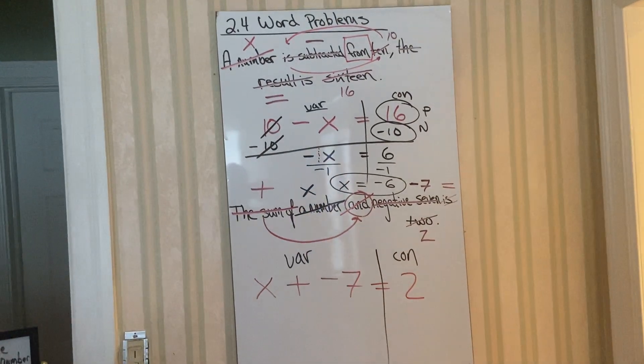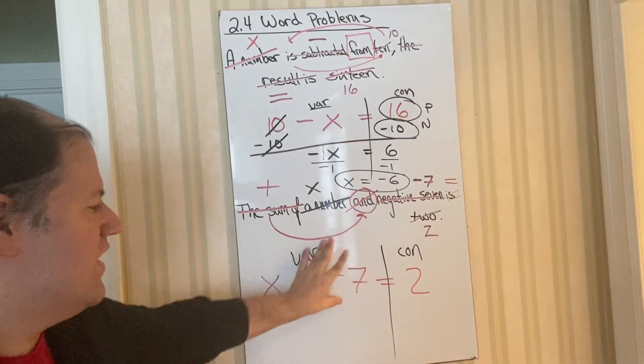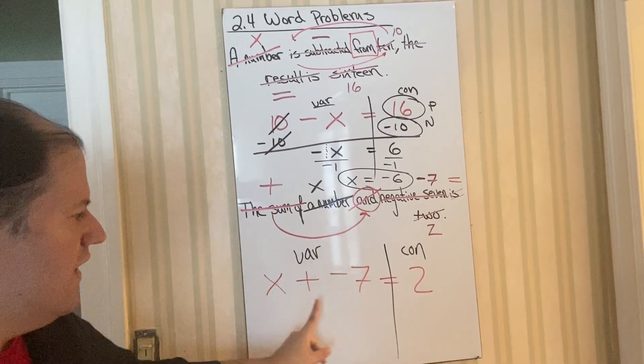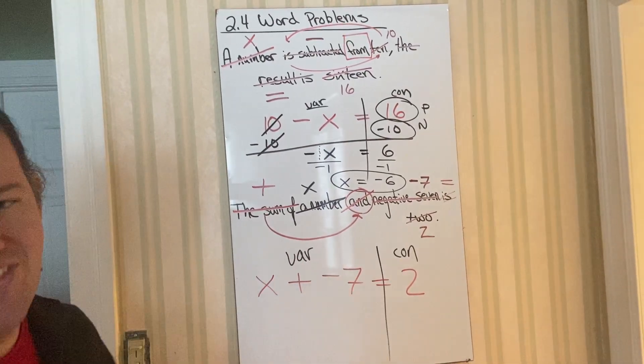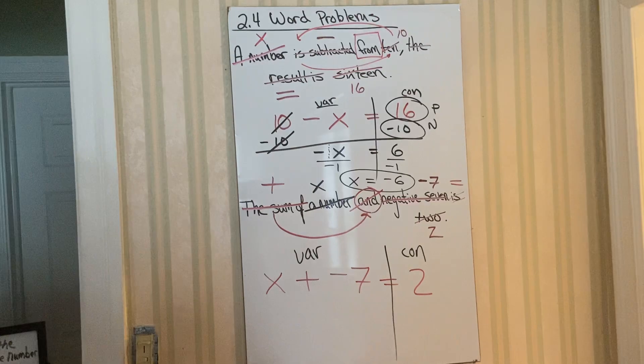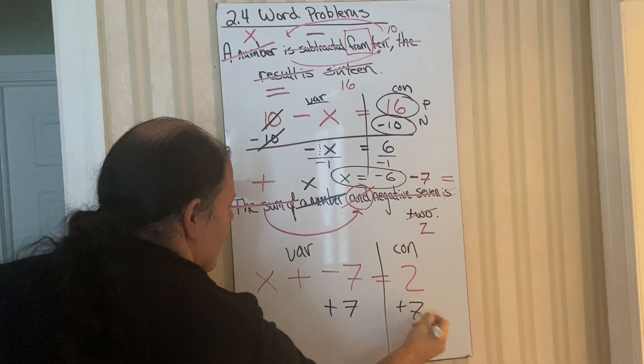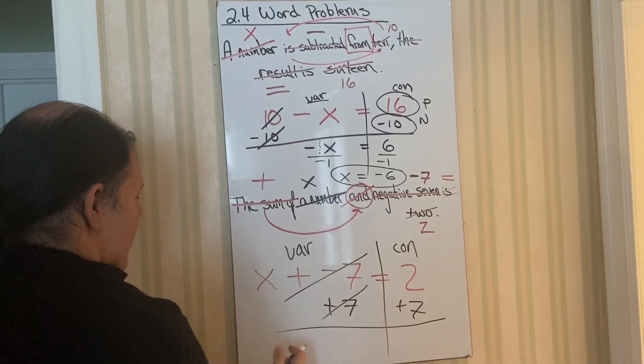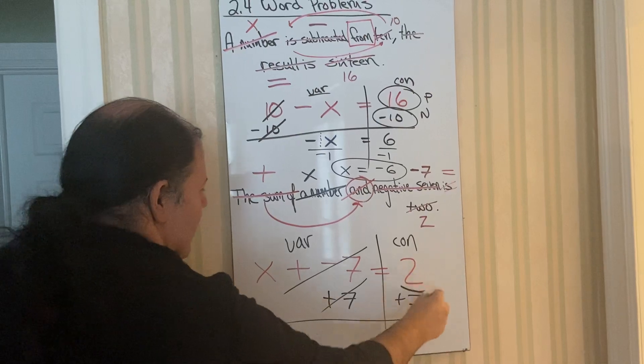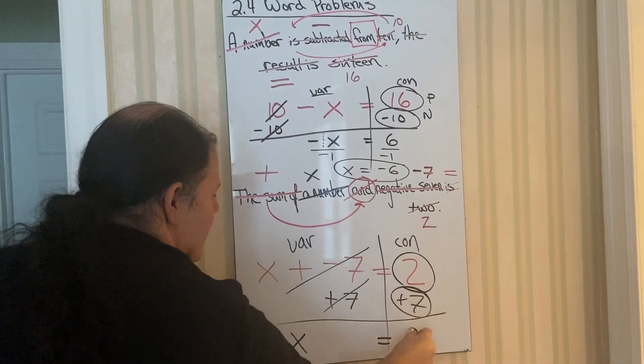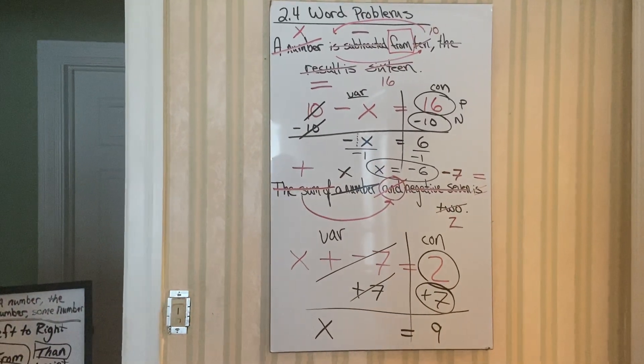So the opposite of a negative, which means I would have to add 7 to both sides. These cancel out. And then 2 plus 7, they're both positives, so we add, we get 9. So you've got to read these very carefully.